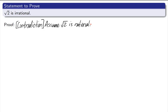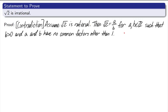Assume square root of 2 is rational. Since it's rational, I can write it as a fraction, but I'm going to write it as a fraction in simplest form. Then square root of 2 is equal to a over b, for a and b being integers, with b being greater than zero, and a and b having no common factors other than one. Square root of 2 is written as a fraction in simplest form.